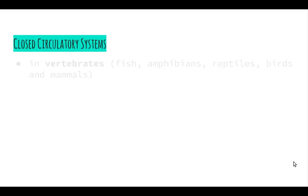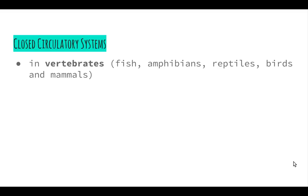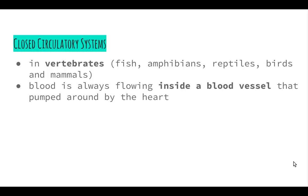Closed circulatory systems are found in vertebrate animals — fish, amphibians, reptiles, birds, and mammals such as humans. So organisms that have a backbone have closed circulatory systems. In a closed circulatory system, blood is always flowing inside a blood vessel, pumped around by the heart. In humans, the heart pumps blood into our arteries, which become smaller capillaries, and then the capillaries become veins that carry the blood back to the heart.